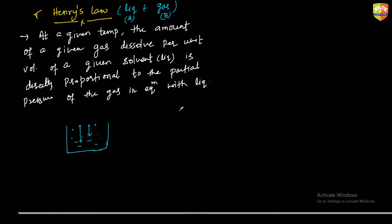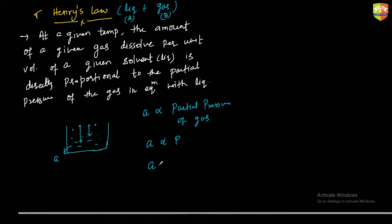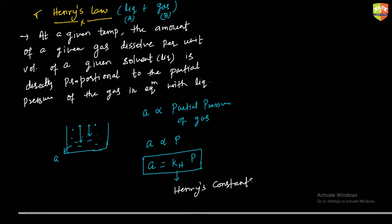The concentration of gas in water — let's call it A — is directly proportional to the partial pressure P of the gas. Removing the proportionality sign: A = KH × P, where KH is Henry's constant.